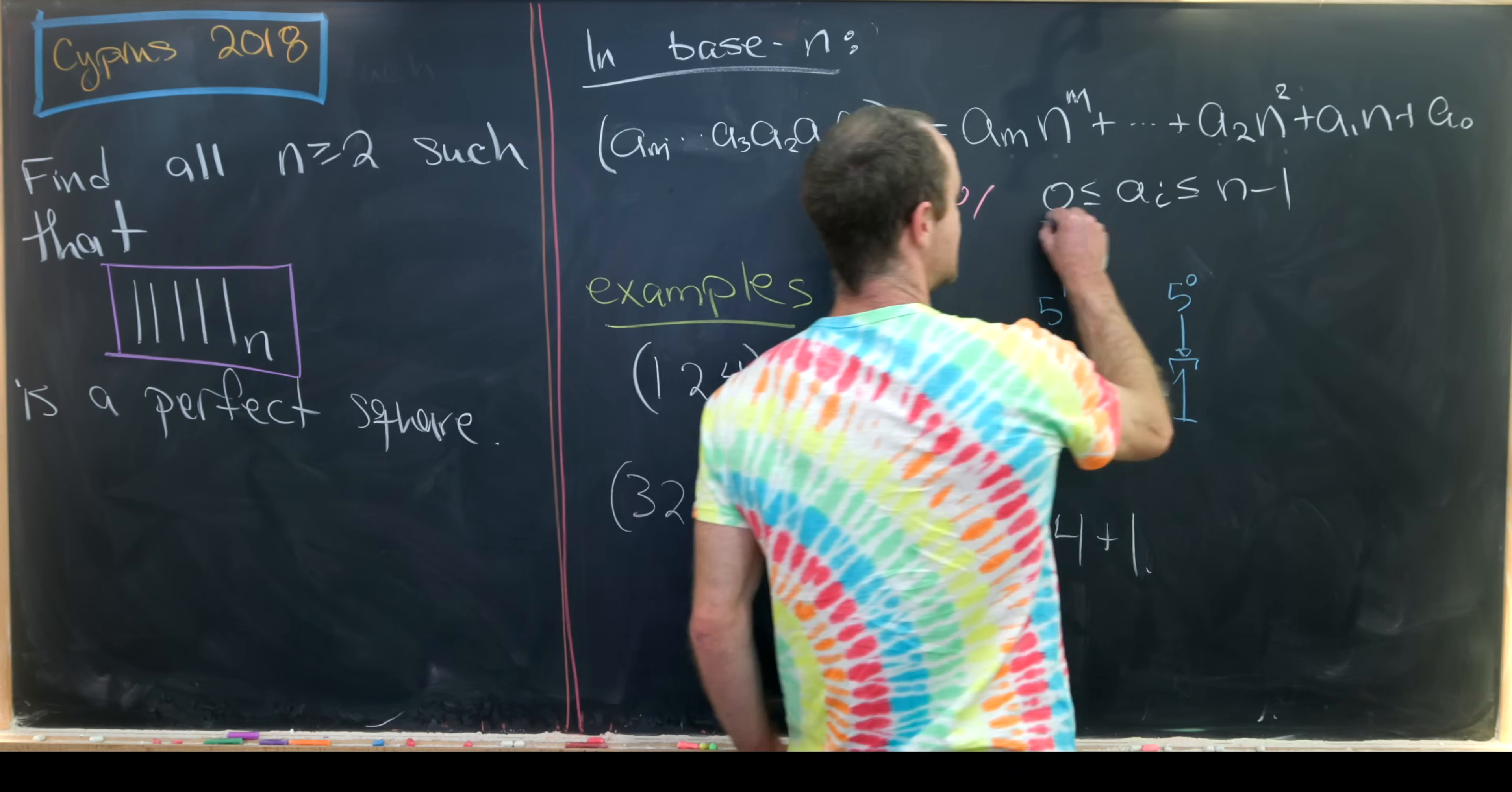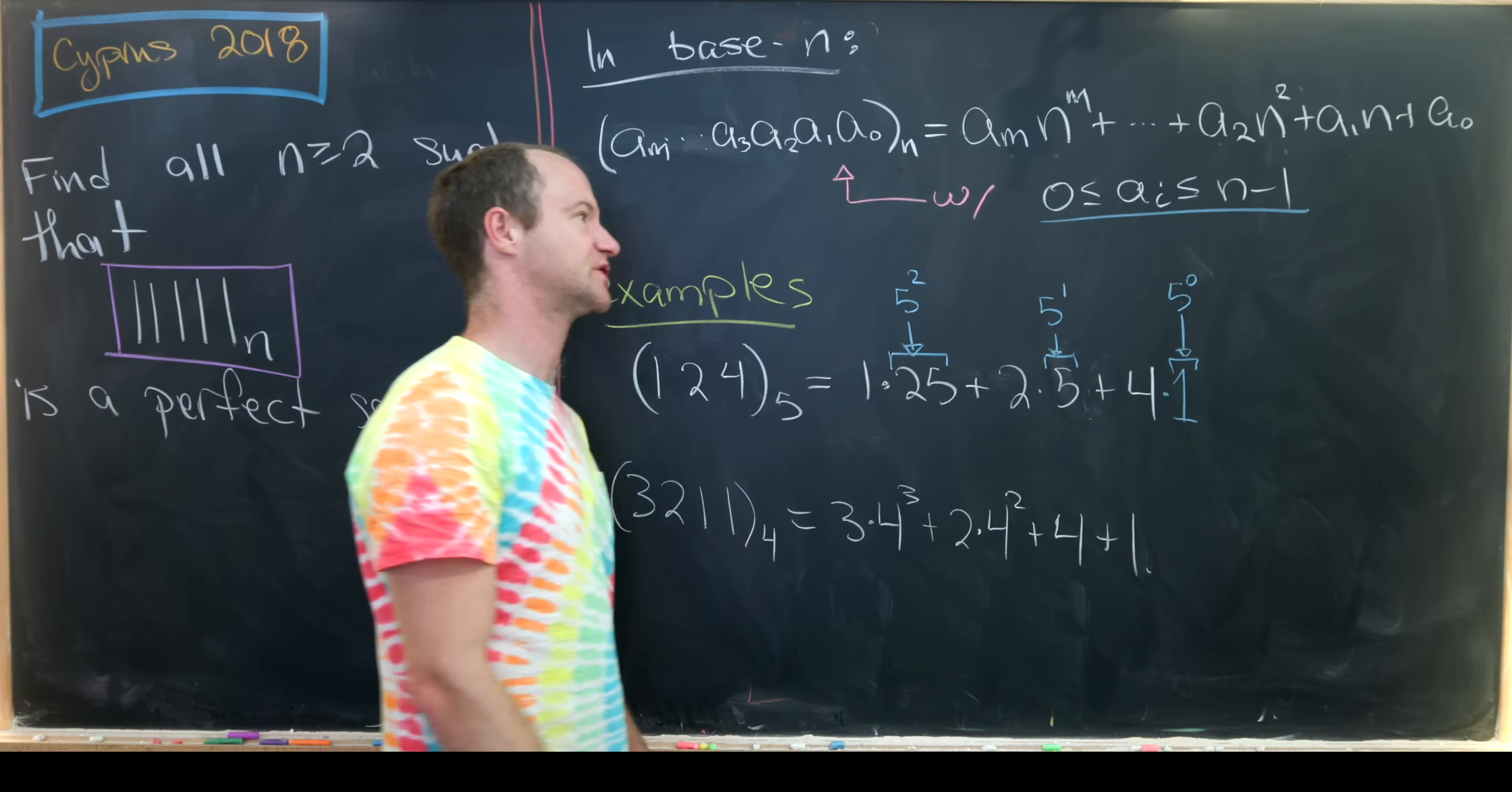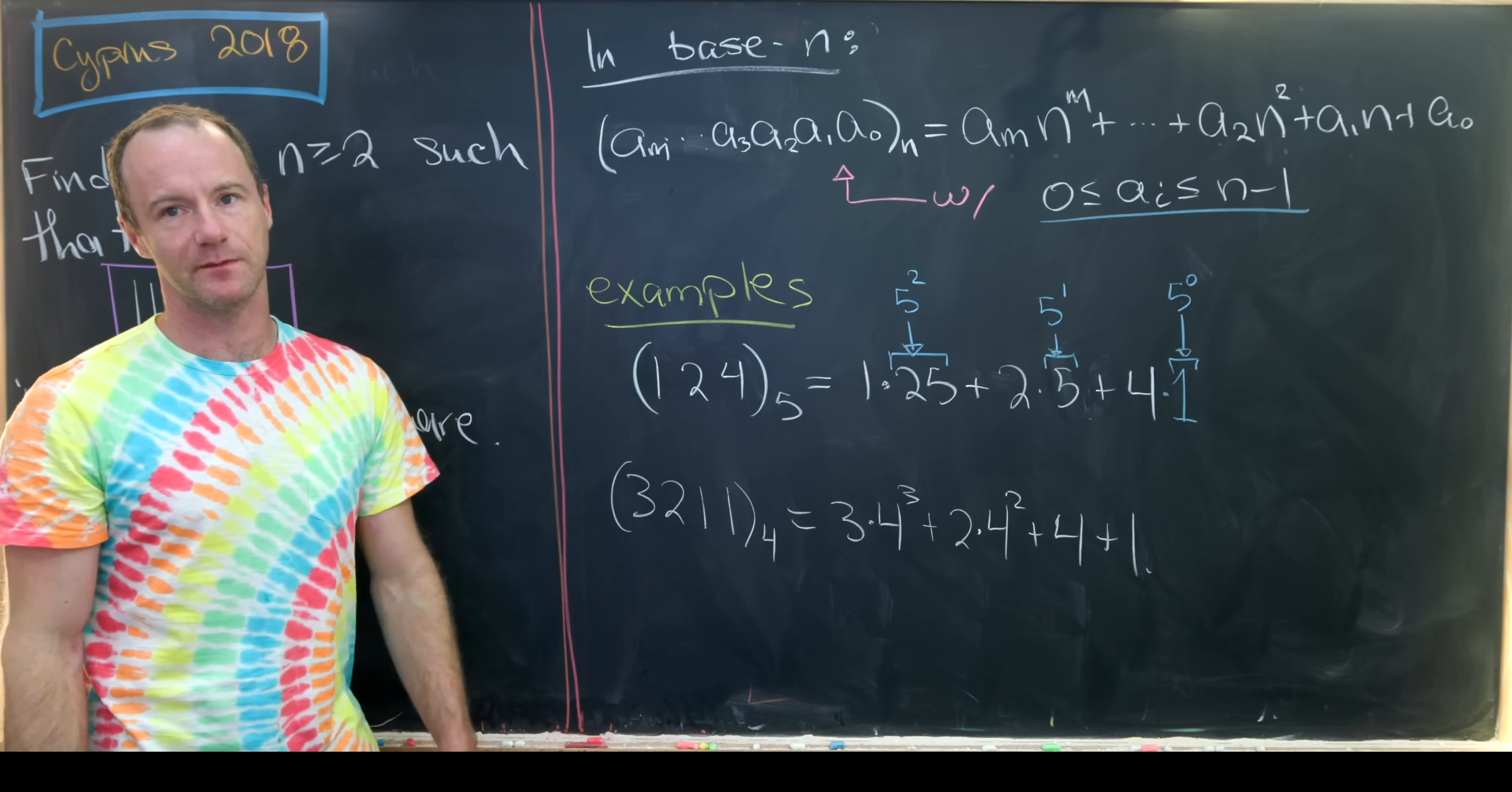And generally, you take a_i to be between 0 and n minus 1. There's actually a nice Putnam problem that asks you to look at base 10 over-representations where you allow this a_i to be equal to 10. But apart from that problem, you always take those digits to be between 0 and 1 less than the base.